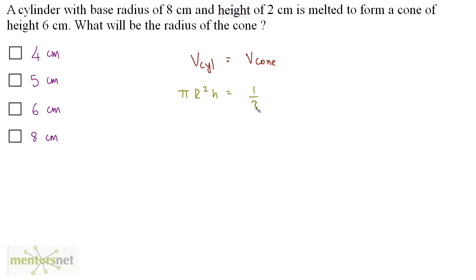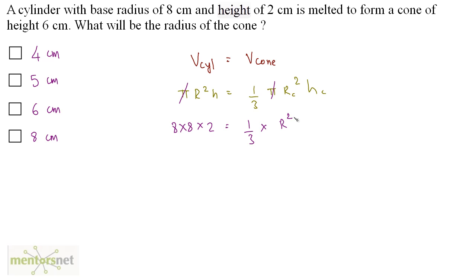Volume of cylinder is π r² h, and volume of a cone is (1/3) π rc² hc. The π cancels out. The cylinder has radius 8 and height 2, so we have 8 × 8 × 2 = (1/3) × r² × 6. Since 3 × 2 = 6, those cancel, giving r² = 8², so r = 8 centimeters. The radius of the cone is 8 centimeters — option D.